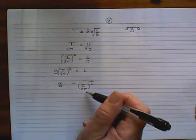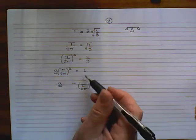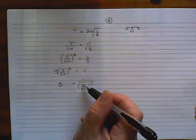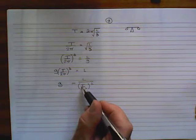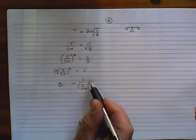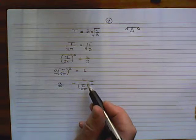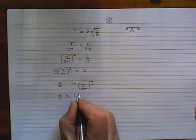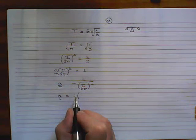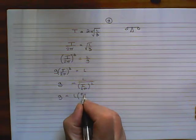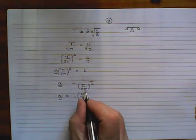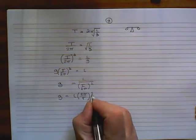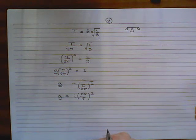Unfortunately, you can't divide by a fraction. So what we need to do is to multiply by the fraction, and therefore invert this. We end up in a situation whereby G equals L times 2π over T, and that is squared. And that is the answer. I hope that is clear. Thank you.